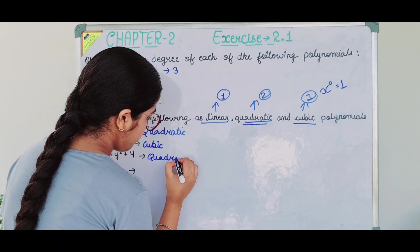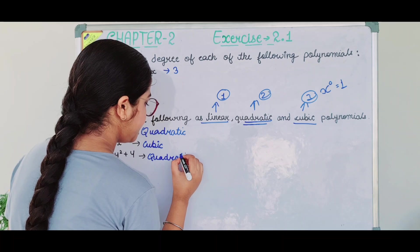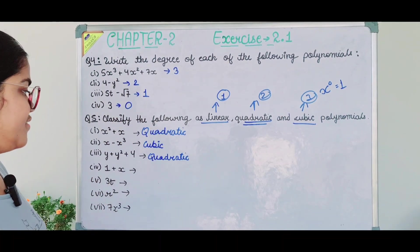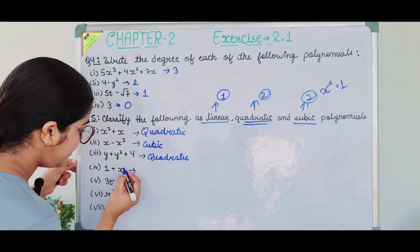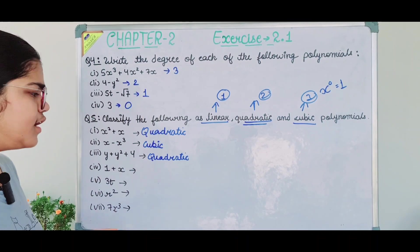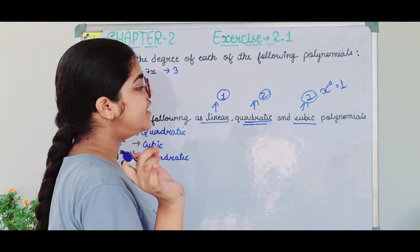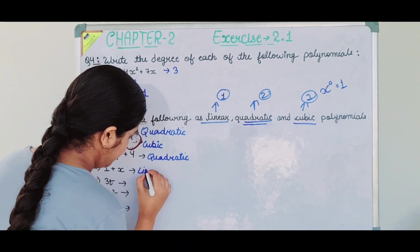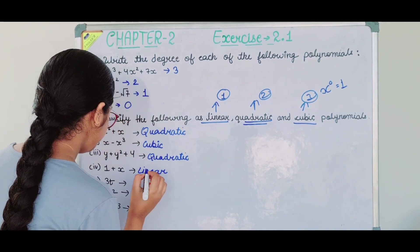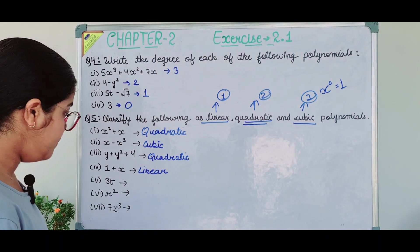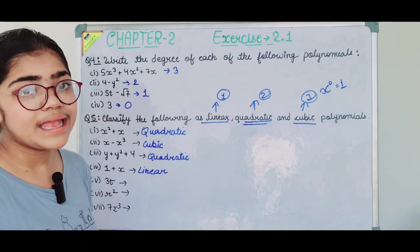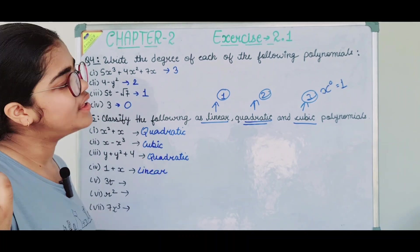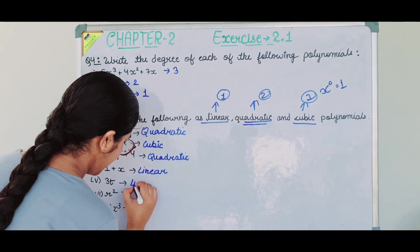The fourth part is 1 + x. The degree is 1. This is a linear polynomial. The fifth part: the variable has power 1 with no higher power, so this is also a linear polynomial.